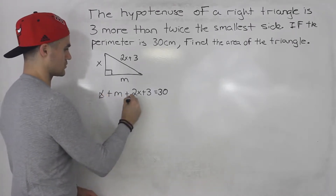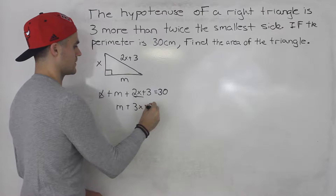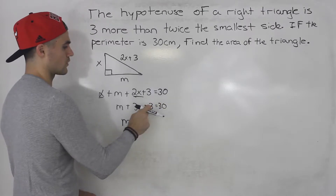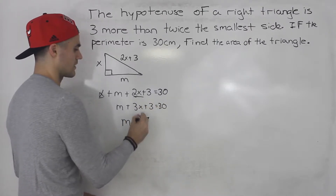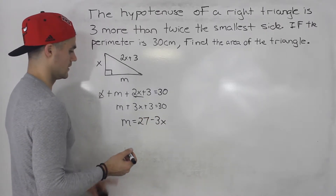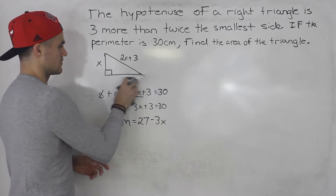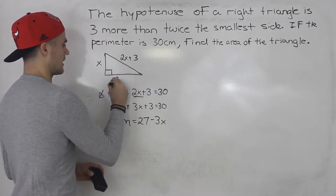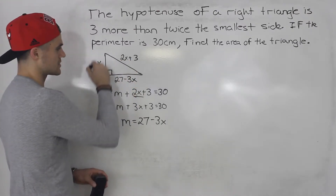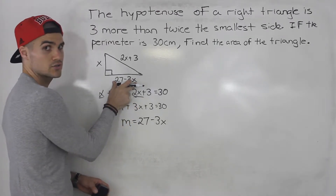Let's collect some like terms first. x plus 2x is 3x, so we'll have m plus 3x plus 3 equals 30. Isolating for m: 30 minus 3 gives us 27, and the positive 3x turns into minus 3x. So m is equal to 27 minus 3x. Instead of having m, we can now label that side as 27 minus 3x. Now all of the sides are in terms of one variable.